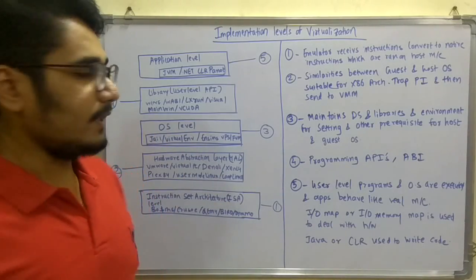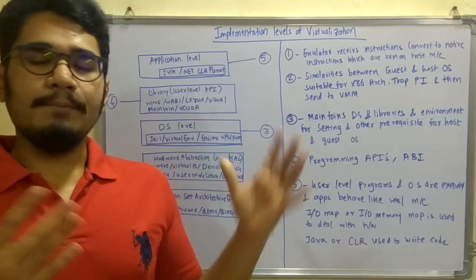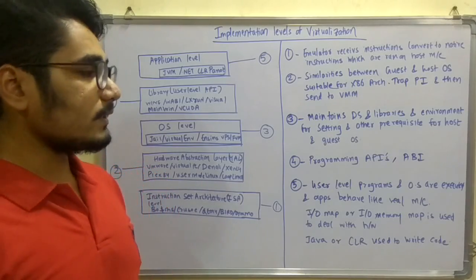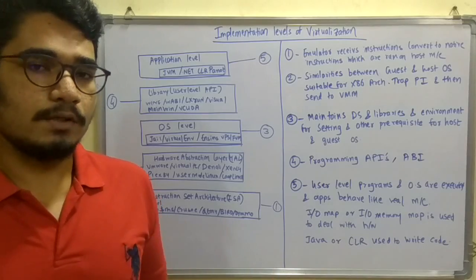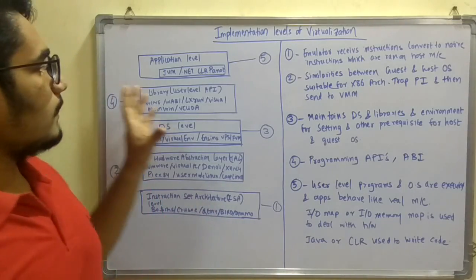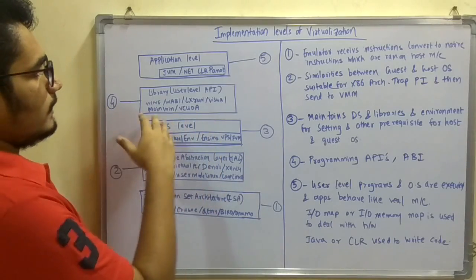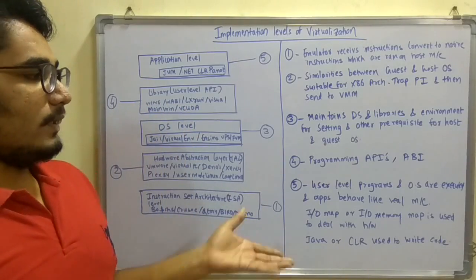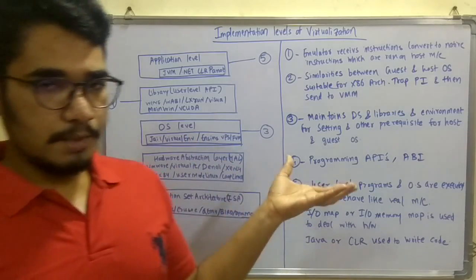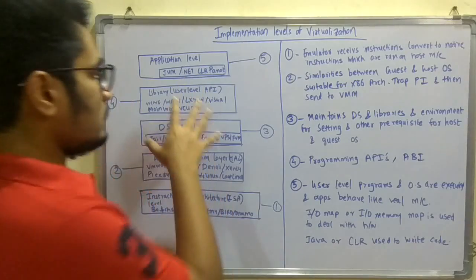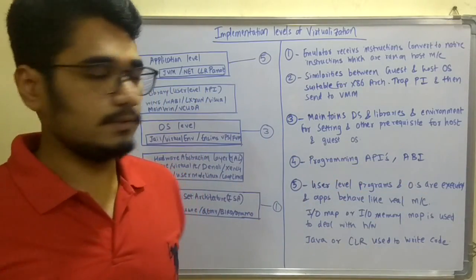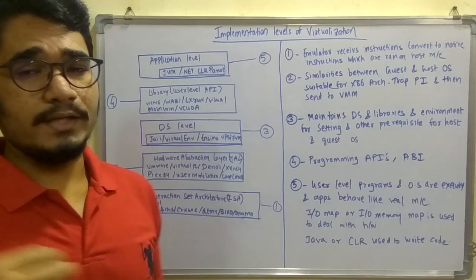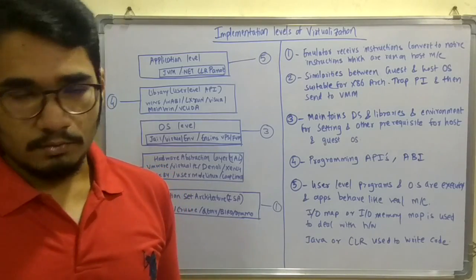Moving above, at level 4, you have the user-level APIs — programming APIs. At the high-end application level you may have to do a lot of processing, calculations, and coding, so a larger set of library application programming interfaces is required. Libraries like Vine, Wabi, Alexa, and Visual Main VM provide these libraries for implementation. These APIs at this layer can also be called ABIs — Application Binary Interfaces — which automatically convert programming logic into binary format, with no need for emulation or intervention in between.